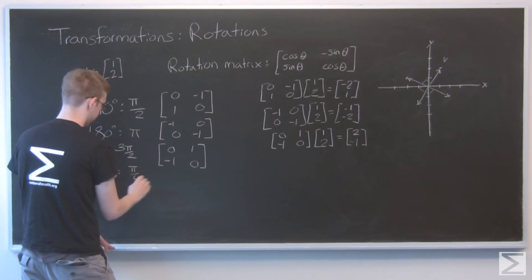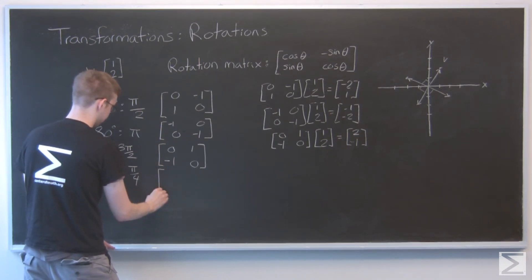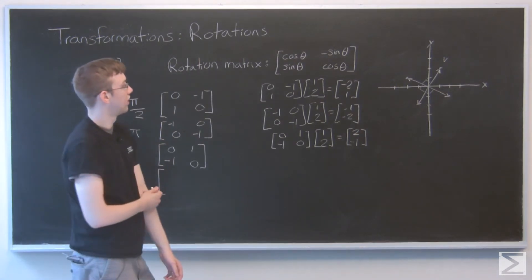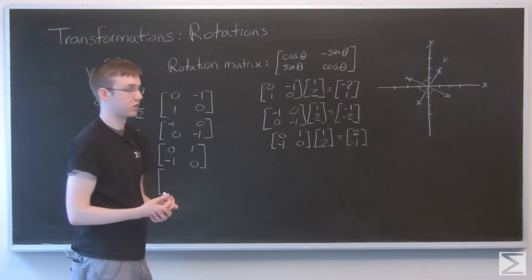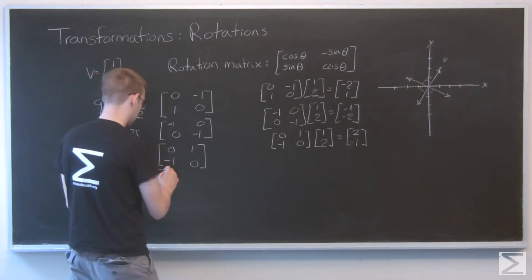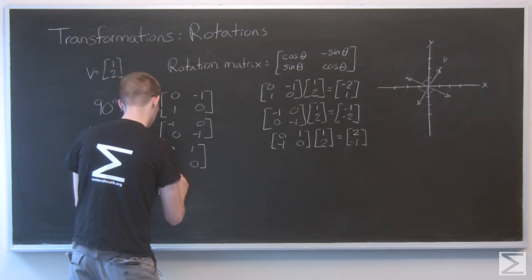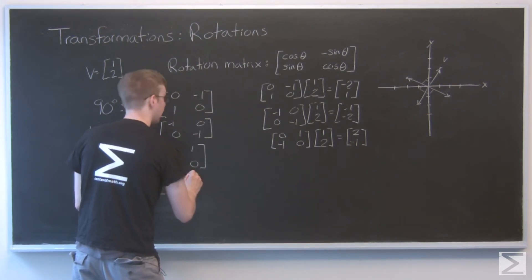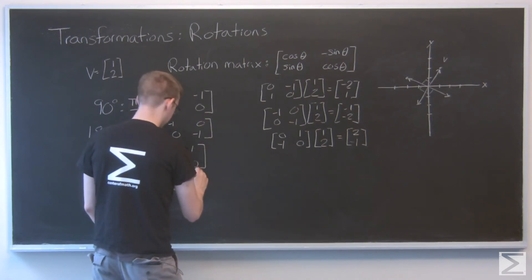That's pi over 4. So cosine of pi over 4 and sine of pi over 4 are the same thing. It's the square root of 2 over 2. And just because that's a minus sign, we'll get negative square root of 2 over 2.